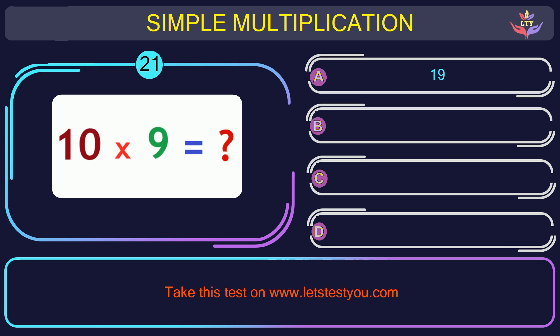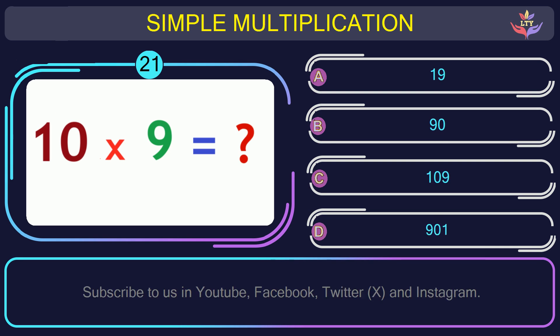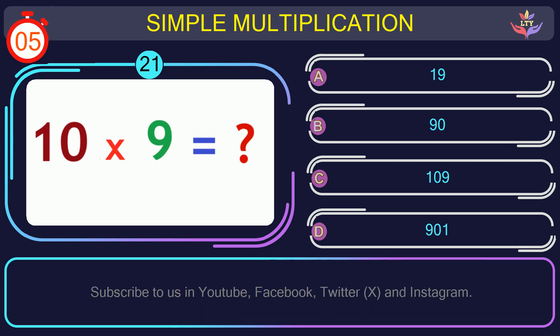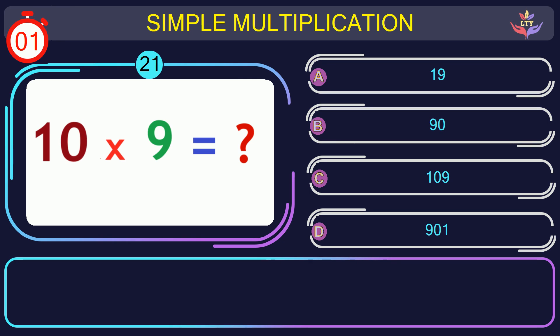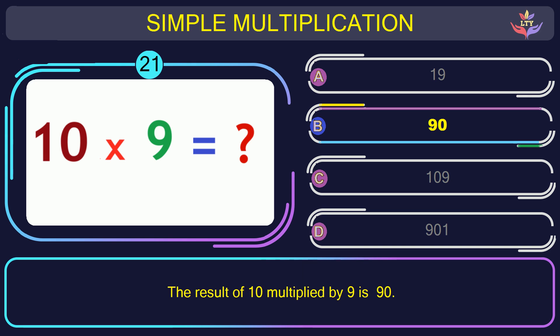Question number 21: what is the result when you multiply 10 by 9? The correct answer is option B: 90. The result of 10 multiplied by 9 is 90.